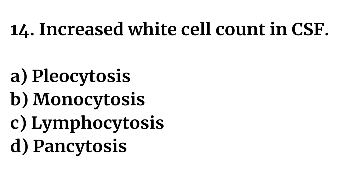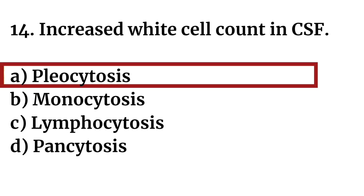Question number fourteen: Increased white cell count in CSF — Option A: pleocytosis. Option B: monocytosis. Option C: lymphocytosis. Option D: pancytosis. The right answer is Option A: pleocytosis. Increased white cell count in CSF is known as pleocytosis.